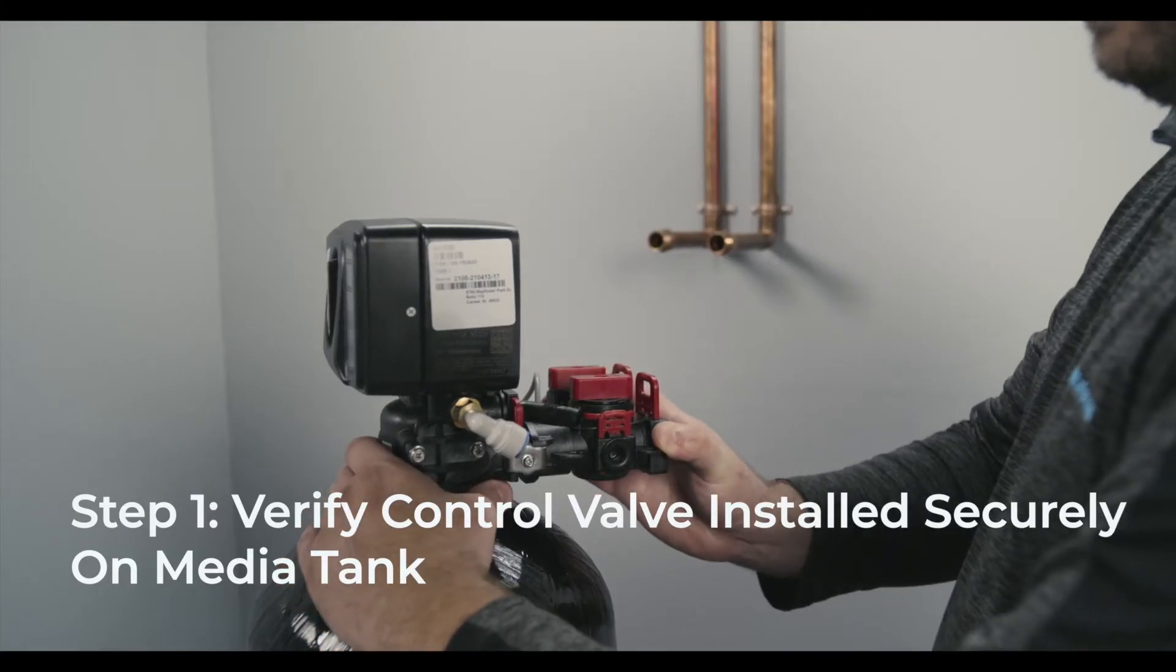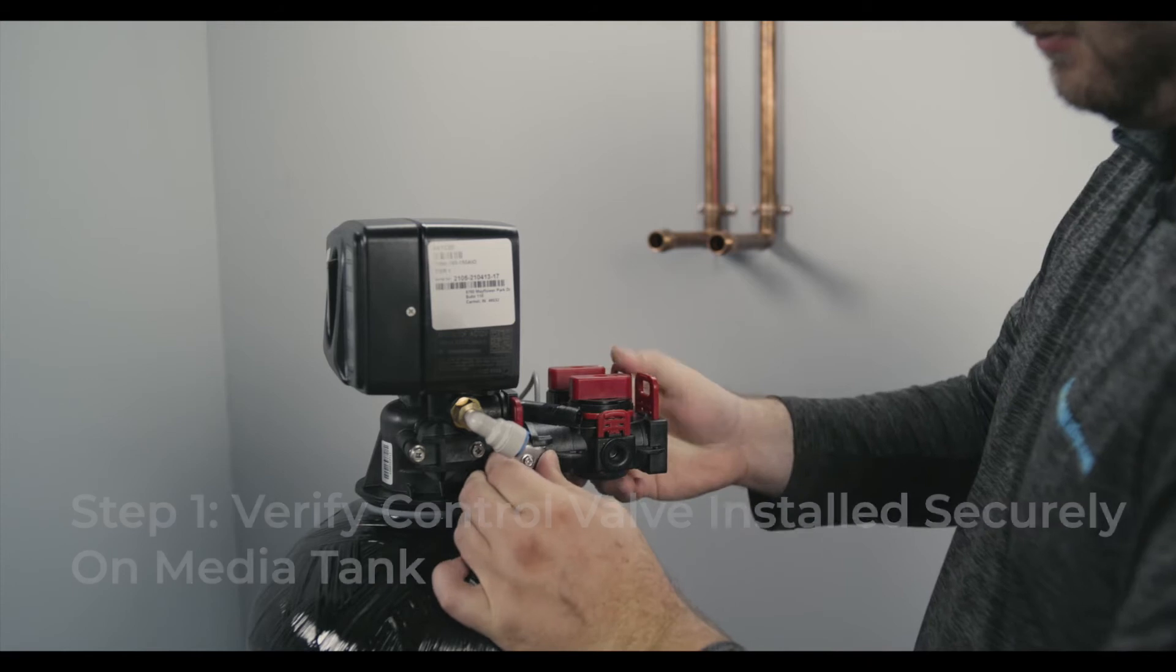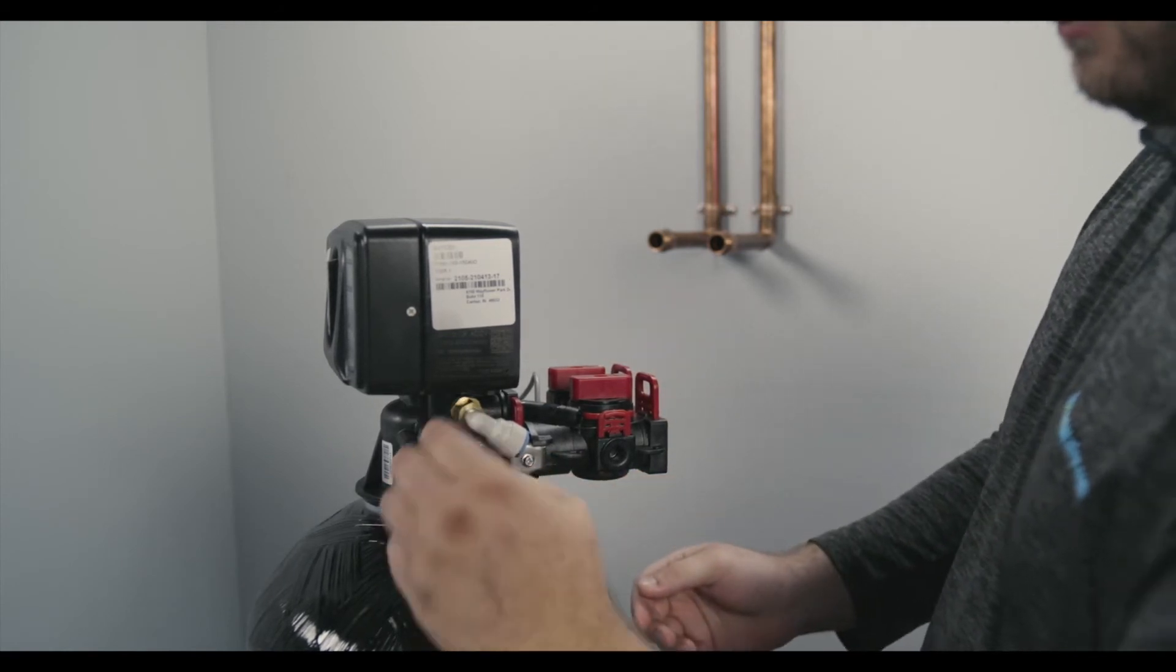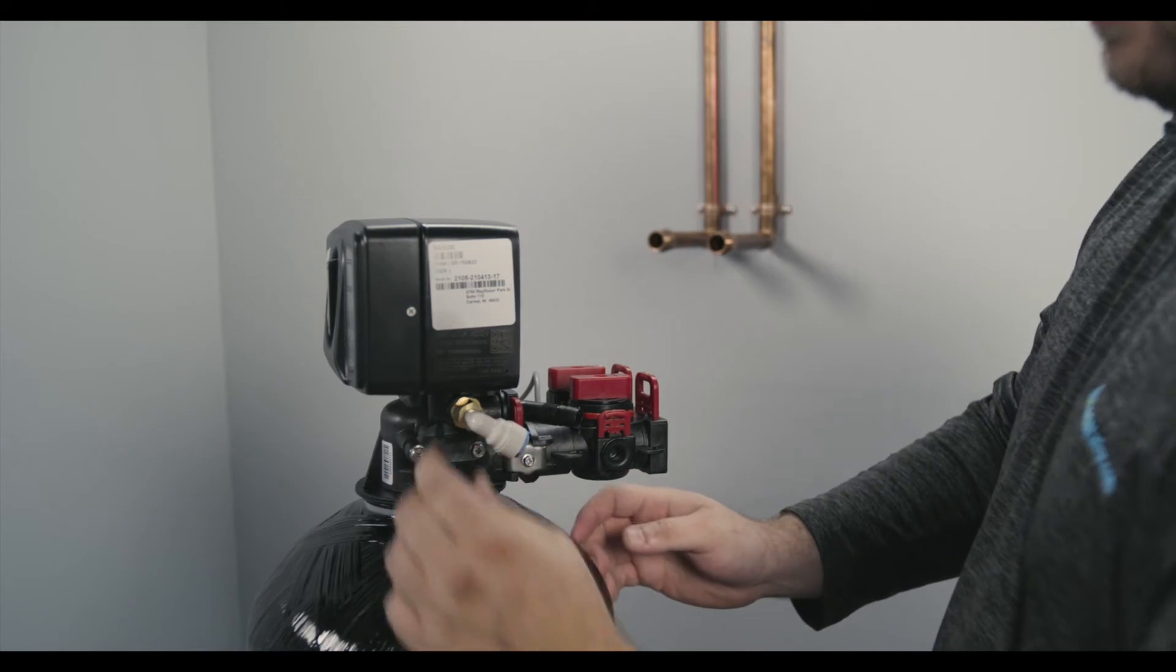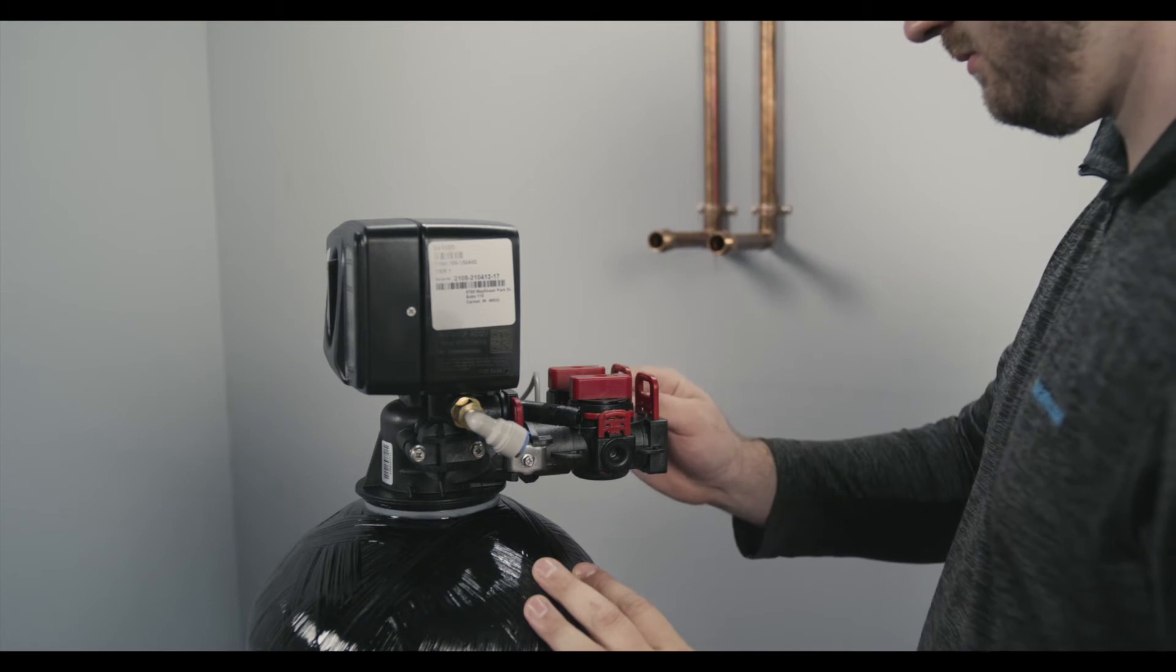To begin the install, verify that the control valve is installed securely on the media tank. Make sure the bypass is well attached to the control valve. Make sure both brass and plastic nuts are tightened well. There are seven red clips, please check to make sure you have all of them.